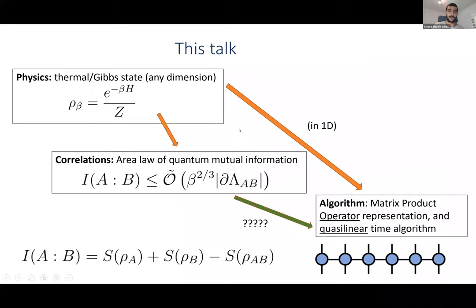What I'm going to talk about is actually two directions that are already known — the area law and the algorithm — where we give improved results. First, we give an area law for the mutual information with a better dependence on temperature: instead of β, we have β^(2/3). Second, in one dimension we have a better algorithm for thermal states — instead of polynomial time, we achieve quasi-linear time. I'll explain why each improvement is important.